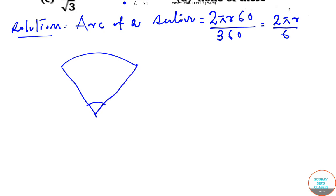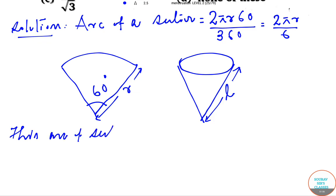Now this becomes your 60 degree. This is your length. And this arc of the sector will be equal to the perimeter of the cone.